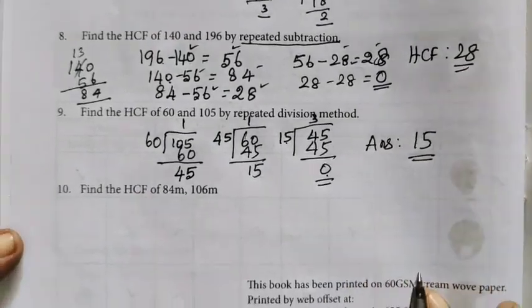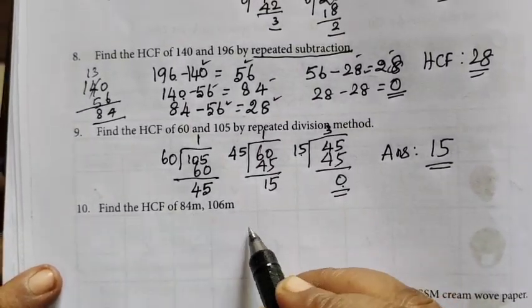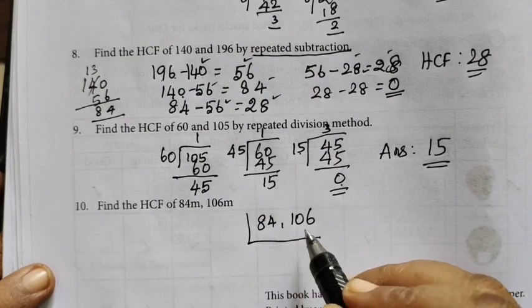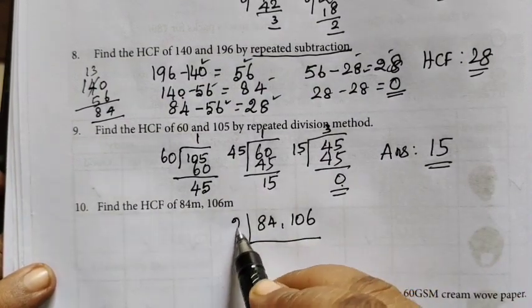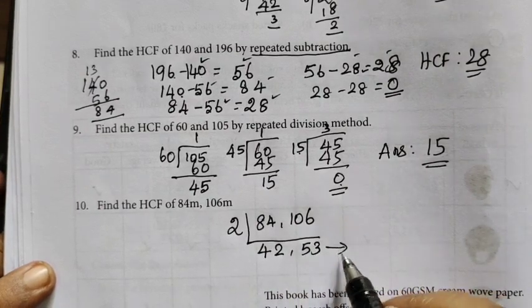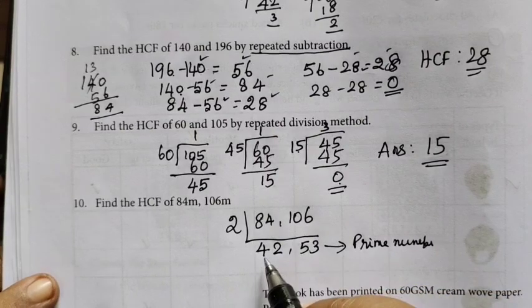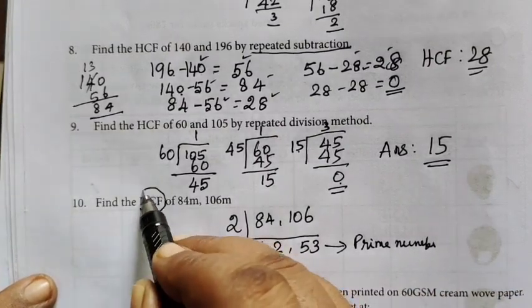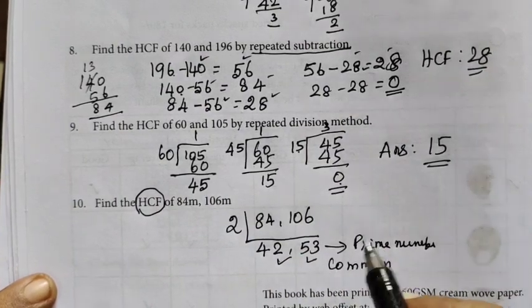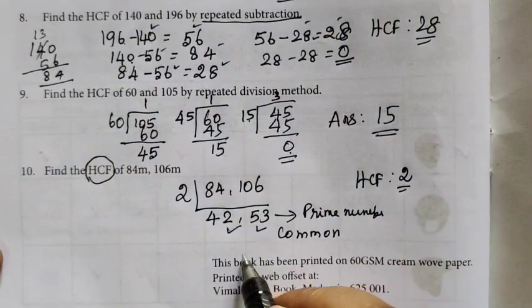Find the HCF of 84 and 106 using this method. So we follow the usual method. 84 is 106. We will start with the prime number, 4 times, 2 times, 5 times, 3 times. 53 is the prime number. So this is the prime number. Next we divide, no use at all. We will start with HCF. If we divide by two, we will not divide. Just to stop it. Therefore HCF is 2.